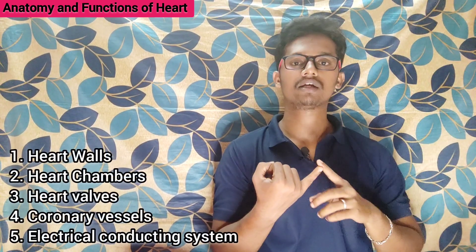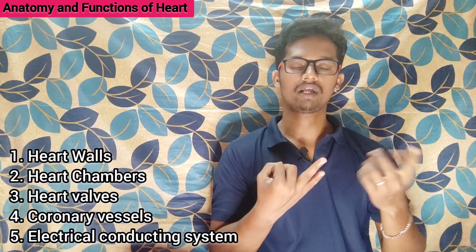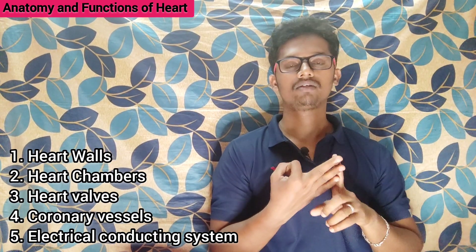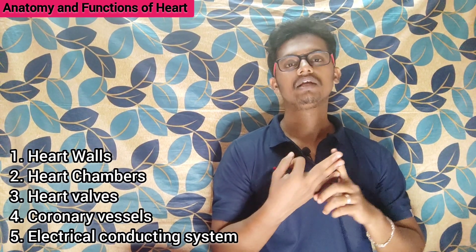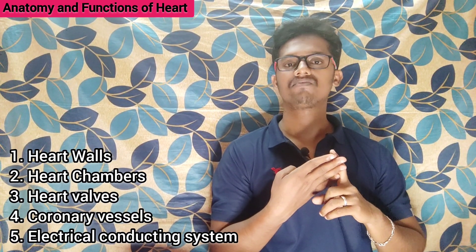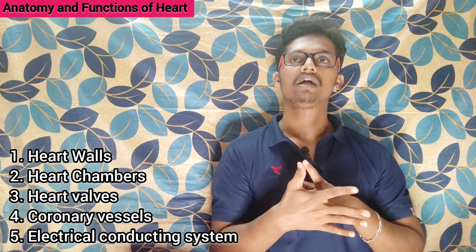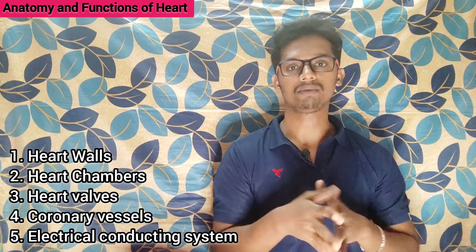Next, anatomy of the heart. The anatomy of the heart has five parts. The first one is walls — that's the boundary layer. The second one is chambers, which we will explain later. The third one is valves — that's the opening and closing valves. The fourth one is blood vessels, which are called coronary blood vessels. The fifth one is the electrical conducting system of the heart, which creates our heartbeat.